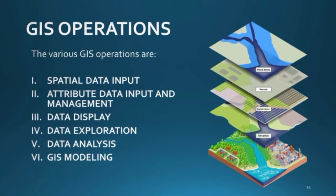The six GIS operations are: first, spatial data input — that is the map input; second, attribute data input and management, where the attribute is the characteristic you want to input, such as customers, streets, pollution, boreholes, etc.; third, data display for better understanding; fourth, data exploration and research; fifth, data analysis; and finally, GIS modeling.